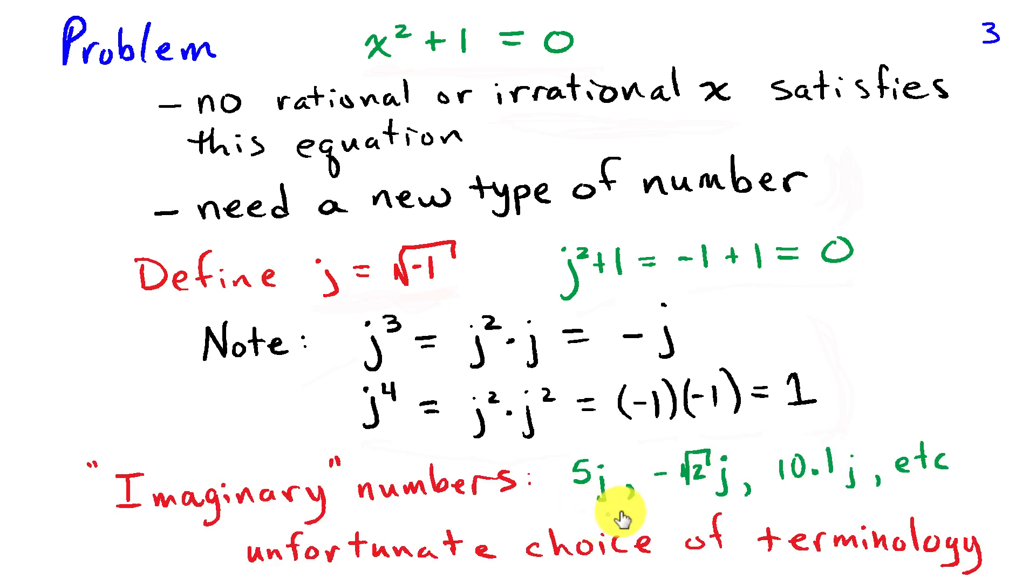This j, or the square root of negative 1, is called an imaginary number. That leads us to things like 5j or negative √2 j, 10.1 times j, and so on. All of those are imaginary numbers because they involve the square root of negative 1. This is a really unfortunate choice of terminology because it implies that these numbers don't really exist, they're somehow in our imagination, but they're not actual numbers. They really do exist, and they serve an extremely useful role in engineering and mathematics for solving certain types of problems that we couldn't otherwise solve without this type of numbers.